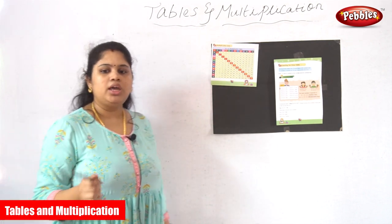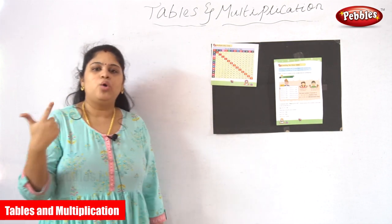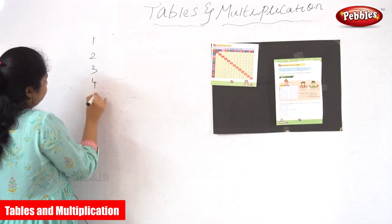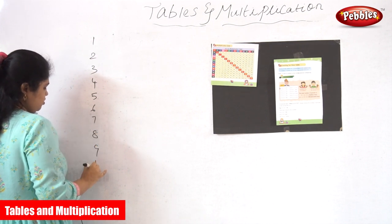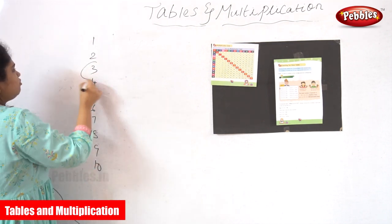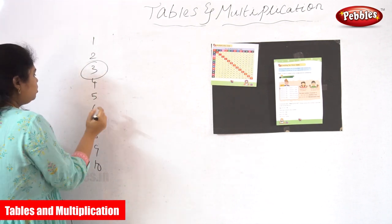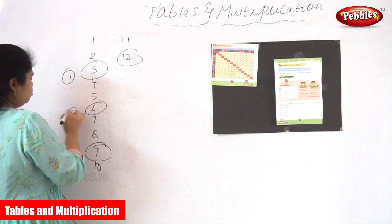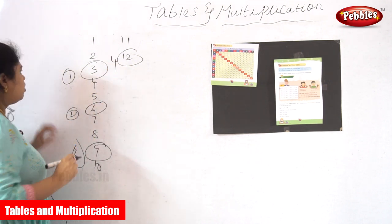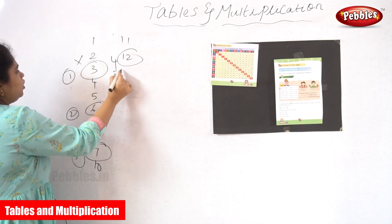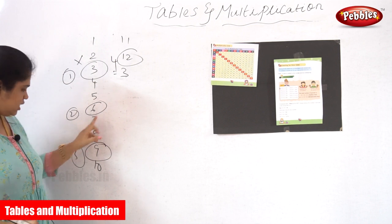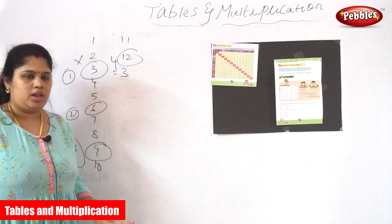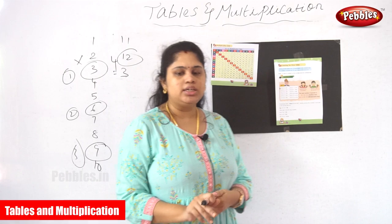The third table works according to skip count by 3. Skip count by 3 means you start from 3 and skip every 3 numbers: 1, 2, 3 — 1, 2, 3 — and so on. So 1 into 3 is 3, 2 into 3 is 6, 3 into 3 is 9, 4 into 3 is 12. This is what the multiplication grid is telling about.